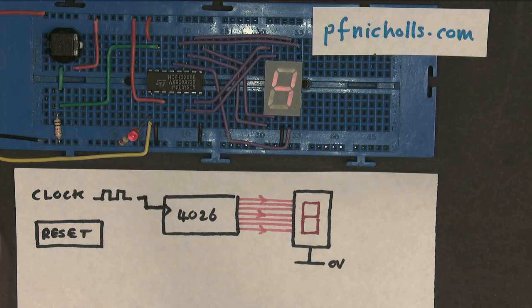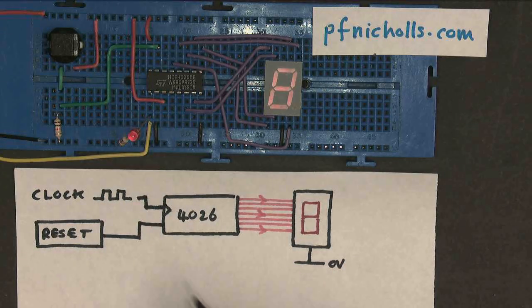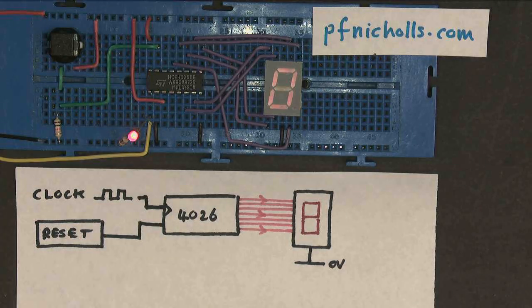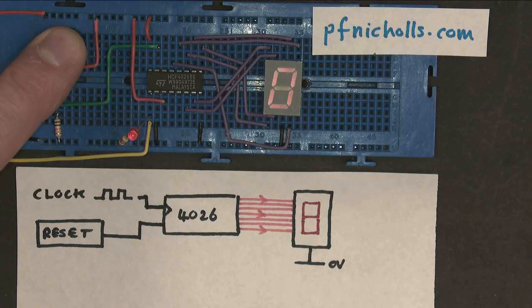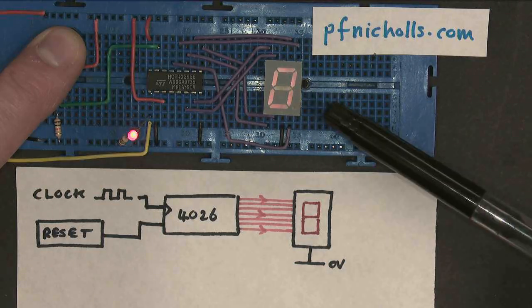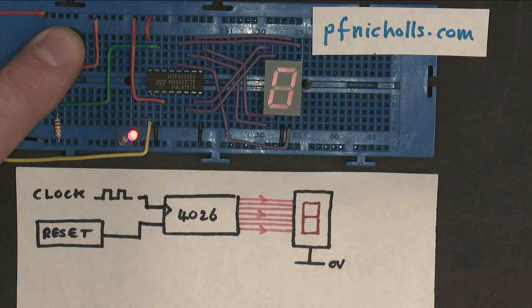I've also attached a reset button, which is just here. When I press the reset button, it resets the counter back to 0, and as long as I press the reset button to keep it held down, the counter output stays at 0, even though I'm still getting clock pulses feeding into my clock.